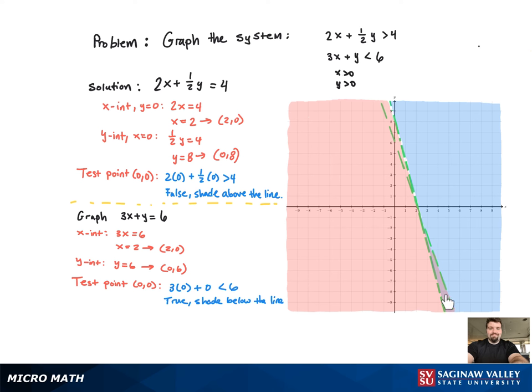So that's our solution region. The only issue is we had an initial constraint of x greater than 0 and y greater than 0, which I'm currently pointing to. So that means we're restricted to quadrant 1.